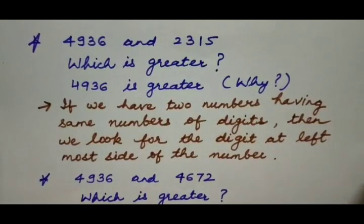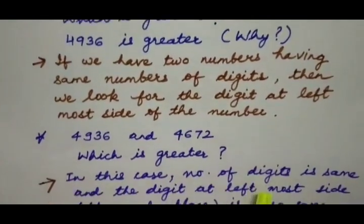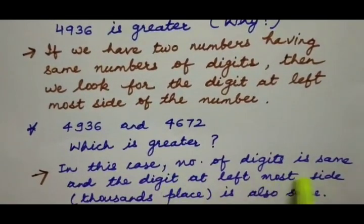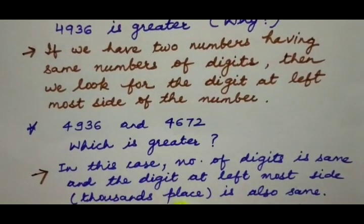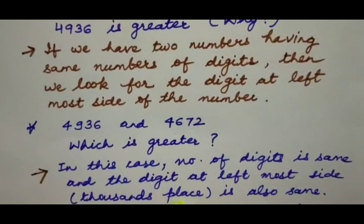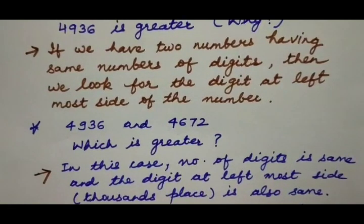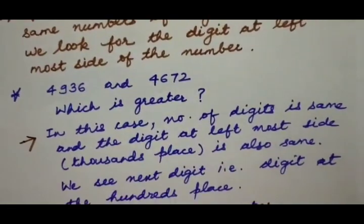In this case, the number of digits is the same and the digit at the leftmost side — the thousands place — is also the same, so we look at the next digit, that is the digit at the hundreds place.